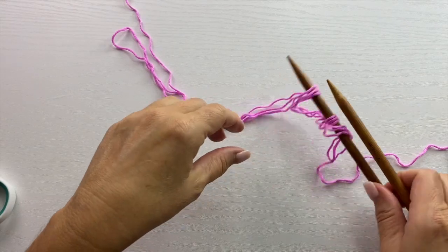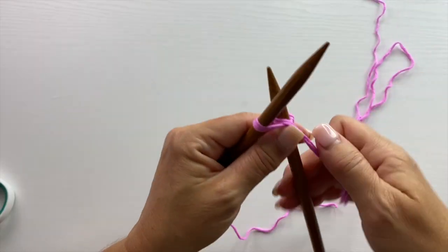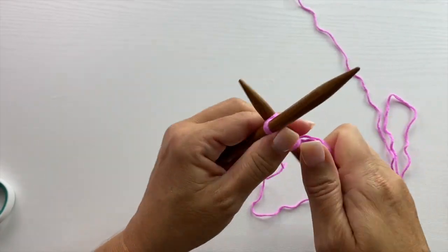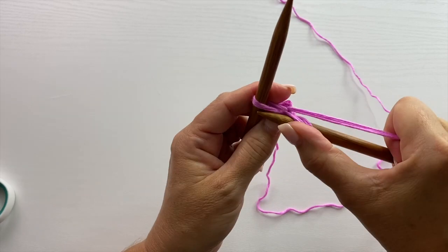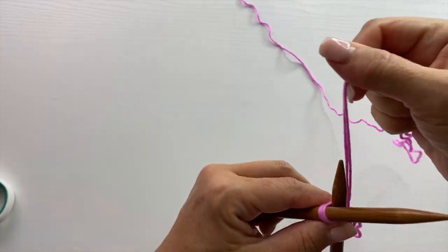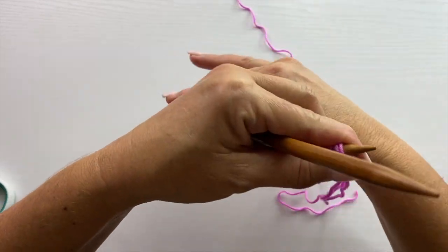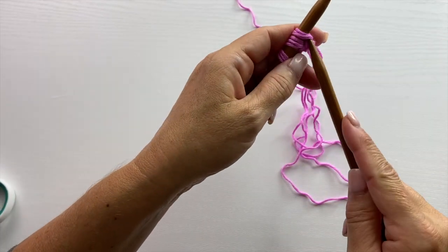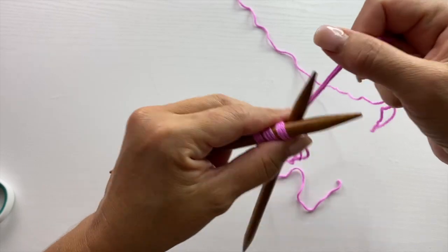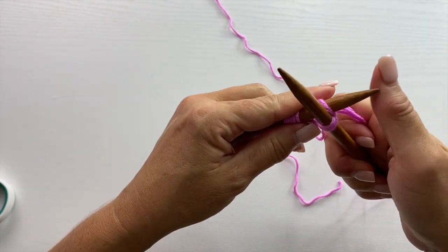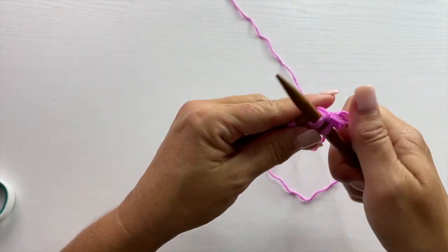Let's do something nice and simple like an I-cord. We'll just knit into the front, back, and front of the same stitch, slide our work to the opposite end of the needle, and knit all three stitches. Just in case you don't know what I-cord is, that's the gist of it.